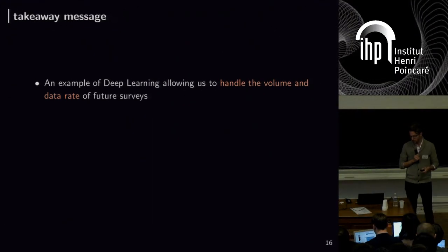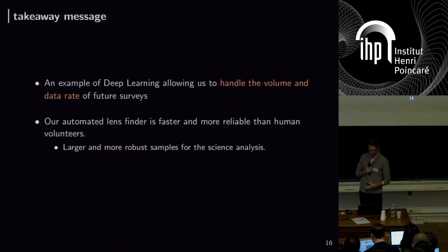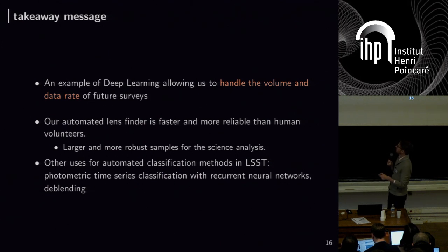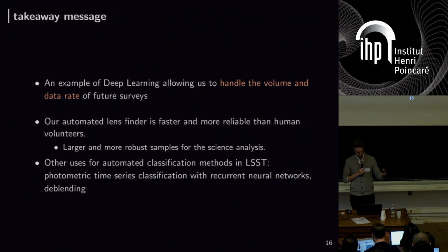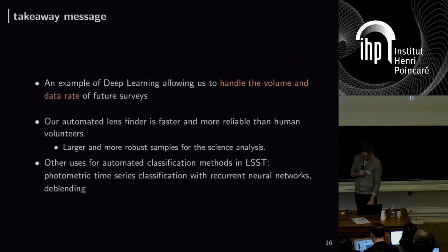I showed this as a first example of why deep learning can be interesting for next-generation surveys: it allows us to handle the huge volumes and data rates we have to deal with. At the end of the day, that means we'll be able to extract larger and more robust samples for doing our science. This is not the only application — I also want to mention photometric time series classification, such as the PLAsTiCC challenge, and other things that happen at the very input of the pipeline at the image level.